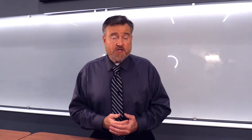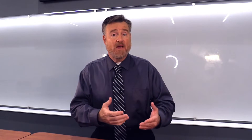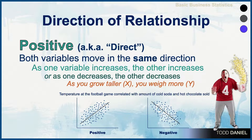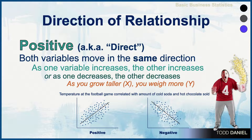The direction of the relationship is indicated by the slope of the regression line. When relationships are positive — which we could also describe as having a direct relationship between the variables — both variables move in the same direction. For example, at a concession stand selling cold soda, as temperature increased, sales of cold soda increased, and as it got colder, we sold less cold soda. Another example: among children, as you grow taller, you weigh more. This is a positive relationship between these two variables.